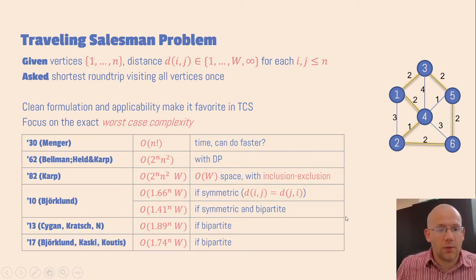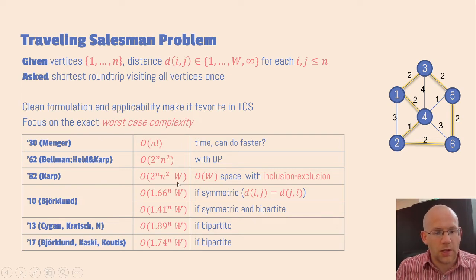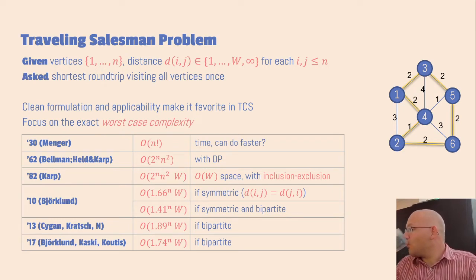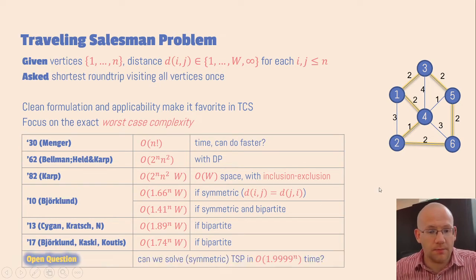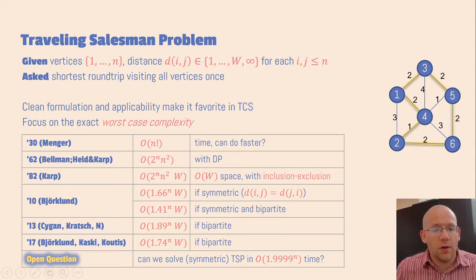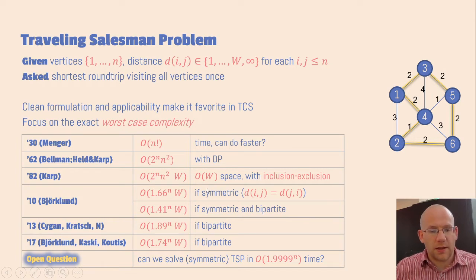Given all these results, one natural question is: can we actually improve the algorithm by Bellman, Held, and Karp? Strictly speaking, all these algorithms are not an improvement because there is this factor capital W — and recall that capital W can very well be exponential in the input size because it's only represented in binary. So the natural question is: can we solve TSP or symmetric TSP faster than 2 to the n? This doesn't seem easy because all these improved algorithms are algebraic algorithms, which means they count certain objects and inherently rely on the power of cancellation in some algebraic setting.